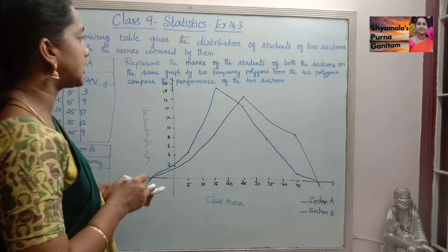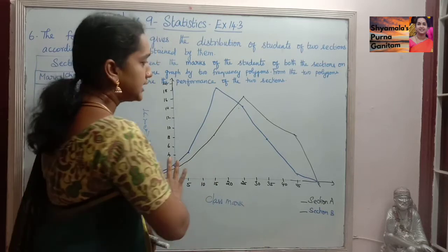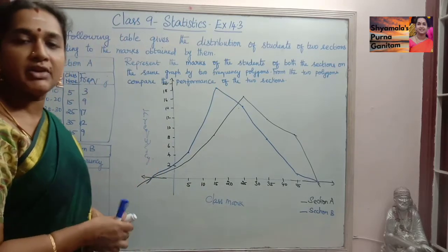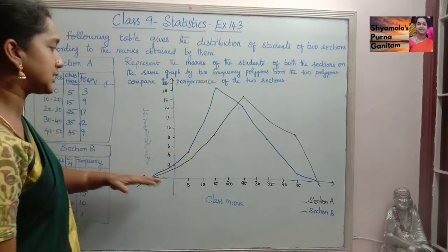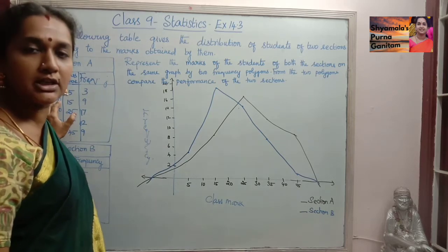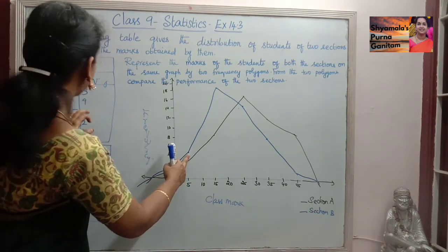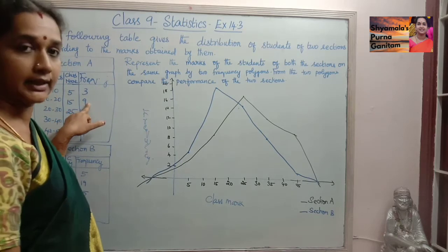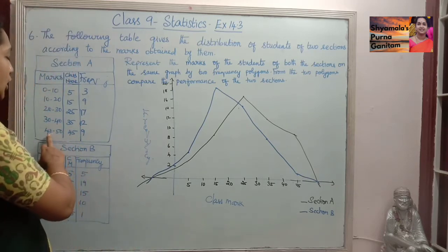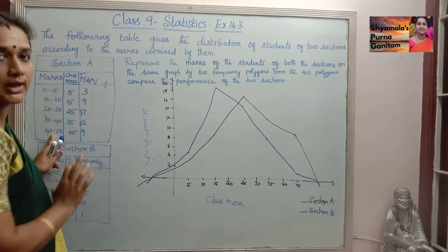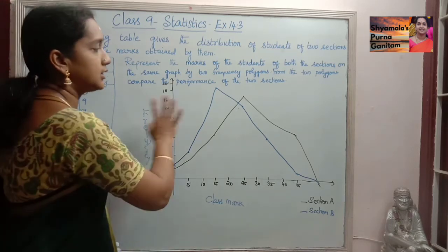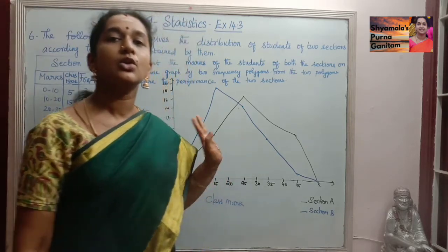We have plotted both frequency polygons on the same graph. Comparing the two sections: between marks 10 to 20, Section A has 9 students while Section B has 19 students. Between marks 40 to 50, Section A has 9 students while Section B has only 1 student. This is the comparative analysis from the two frequency polygons for the given data.